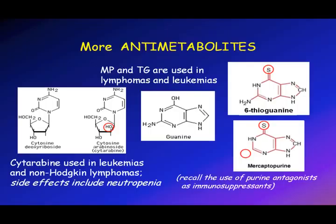There are many more anti-metabolites. Cytarabine is used in leukemias and has a clear relationship to cytosine. 6-Thioguanine and mercaptopurine look like guanine and suppress guanine synthesis in cells.